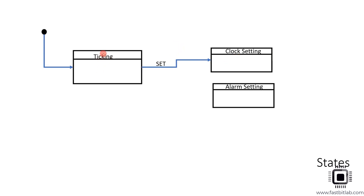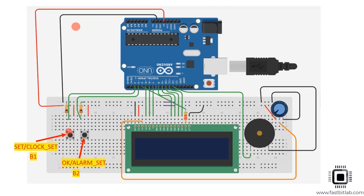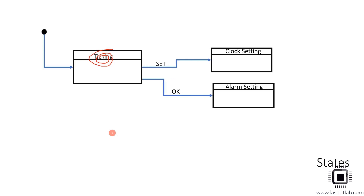Whenever the application is in ticking mode and the user presses the OK button, the application's state changes to alarm setting. So when the mode is ticking, the user can press one button to enter clock setting mode or press another button to enter alarm setting mode. That's why there are two events — the SET and OK signals are processed like that when the application is in ticking mode.